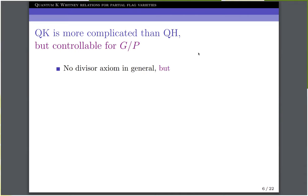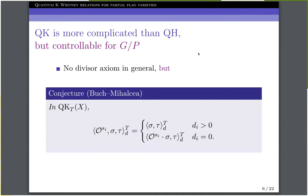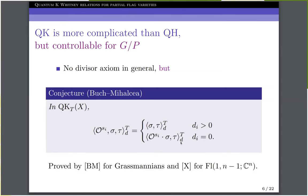So I've said that there is no divisor axiom in general in quantum K-theory, but we have the following conjecture of Buch and Mihalcea, which can be viewed as a divisor axiom for type A flags. Here, this O^X_i is the K-theory class given by the structure sheaf of the i-th Schubert divisor. Notice that in the case where the divisor and the degree pair to zero, which is the second case, the K-theoretic Gromov-Witten invariant may not necessarily vanish. So this is also a difference from cohomological Gromov-Witten invariants. This conjecture was proved by Buch and Mihalcea for Grassmannians, and I proved it for incidence varieties.